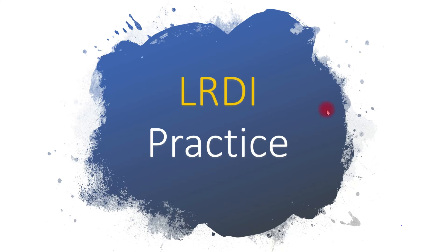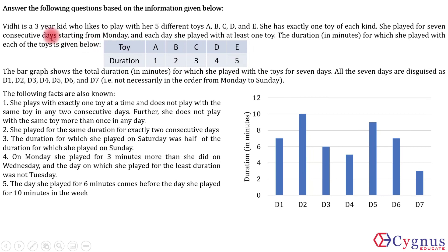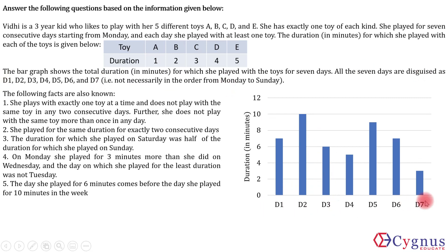Let's look at this set. Vidhi is a 3-year-old kid who likes to play with her 5 different toys A, B, C, D and E. She has exactly one toy of each kind. She played for 7 consecutive days starting from Monday, and each day she played with at least one toy. The duration in minutes for which she played with each toy is given in a table, and the bar graph shows the total duration for each of the 7 days. All 7 days are labeled D1 to D7, not necessarily in order from Monday to Sunday — that we will have to figure out ourselves. The following facts are known.